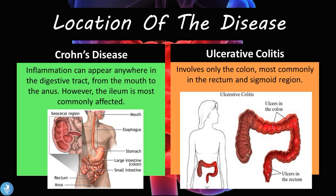The first thing we're going to talk about is the location of the disease. In Crohn's disease, inflammation can appear anywhere in the digestive tract from the mouth to the anus; however, the ileum is most commonly affected. The ileum is that terminal portion of the small bowel.